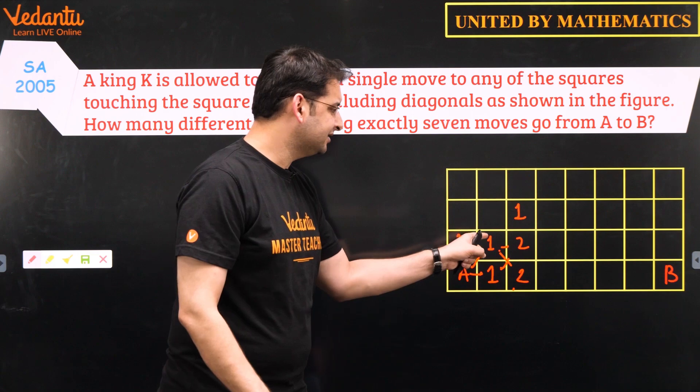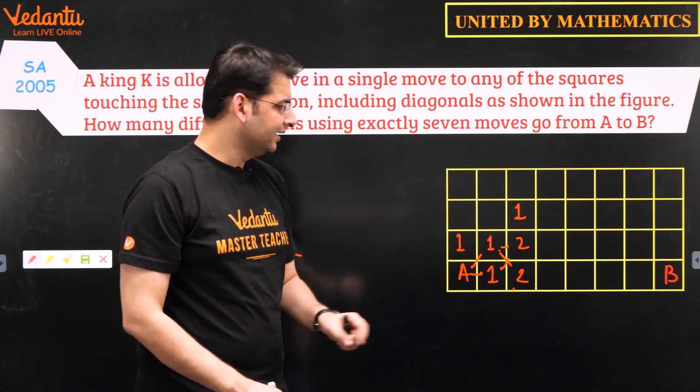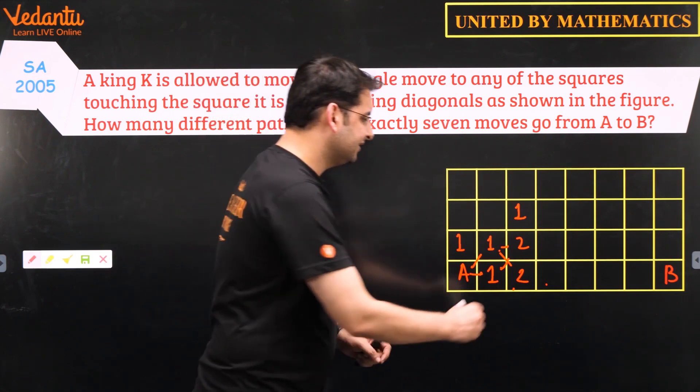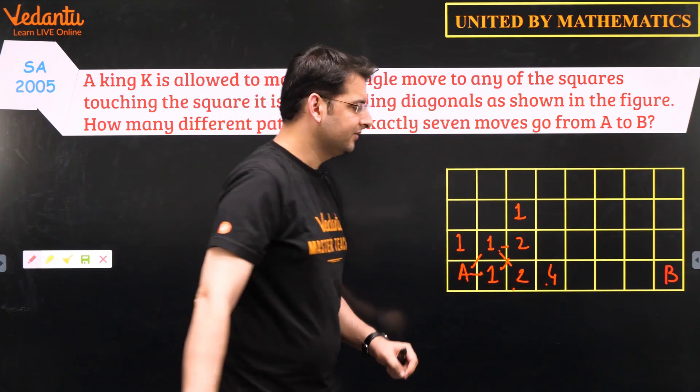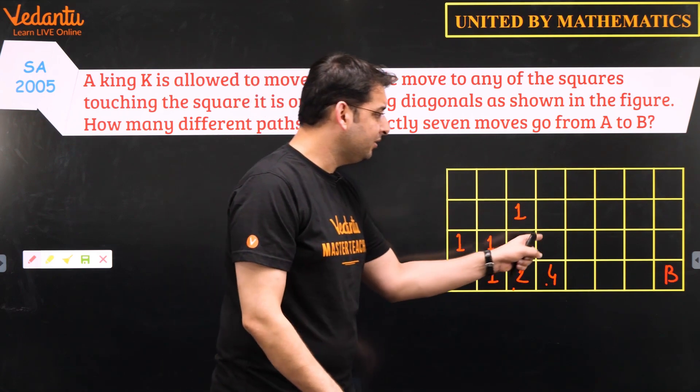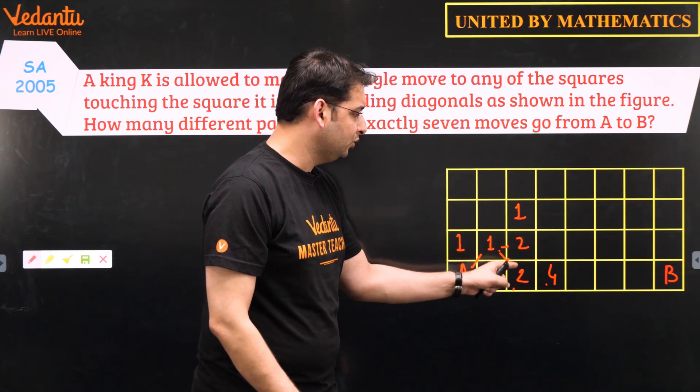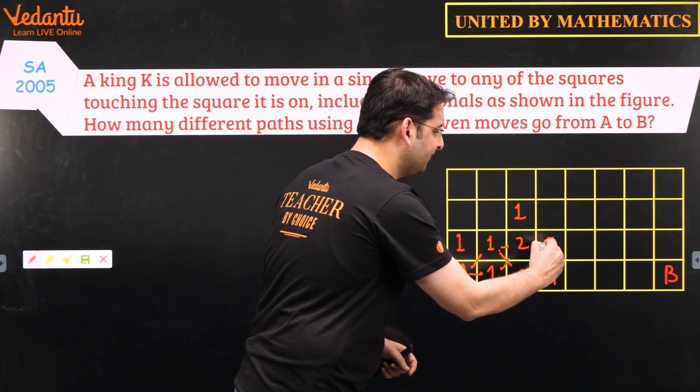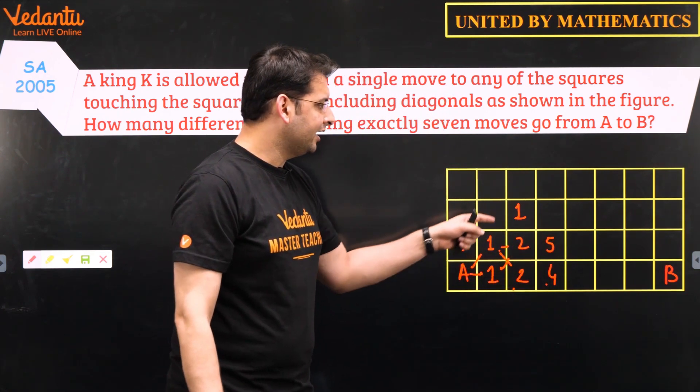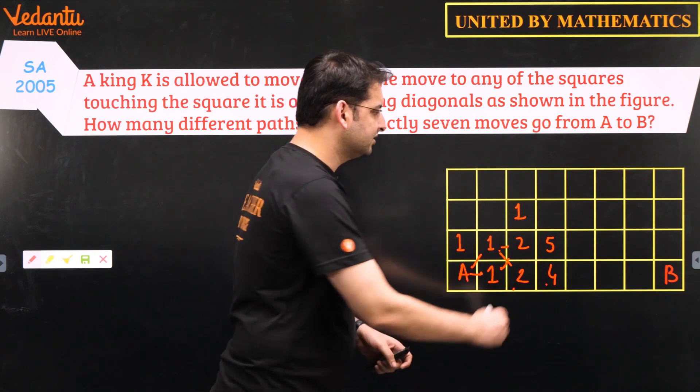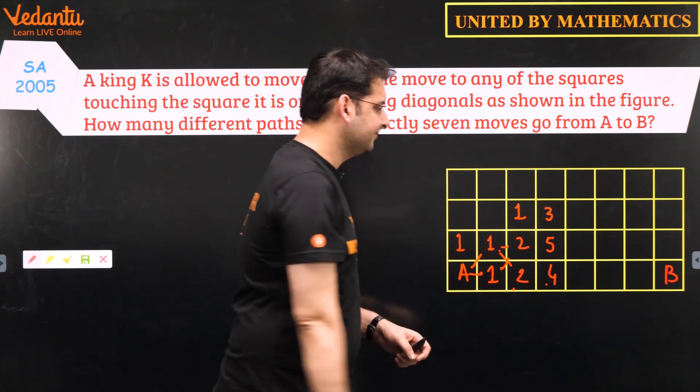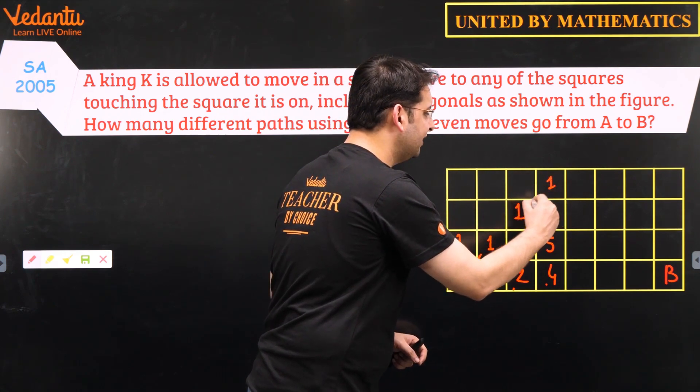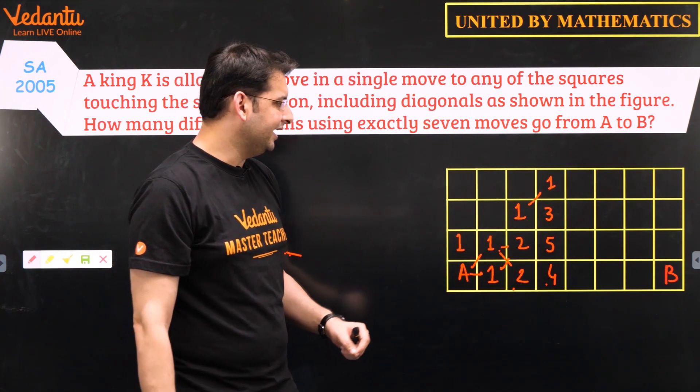For example, the number of ways to reach this particular box is 1 again. So this and this, 2 moves. The number to reach this particular box in 3 moves is of course 4. 2 here, 2 here. The number to reach this particular box would be 2 plus 2 plus 1 because all the 3 boxes are adjacent to this box, it will be 5. And number of ways to reach this particular box would of course be 3, 2 plus 1. And this would of course be 1. There is only one way to reach here in the fourth move.